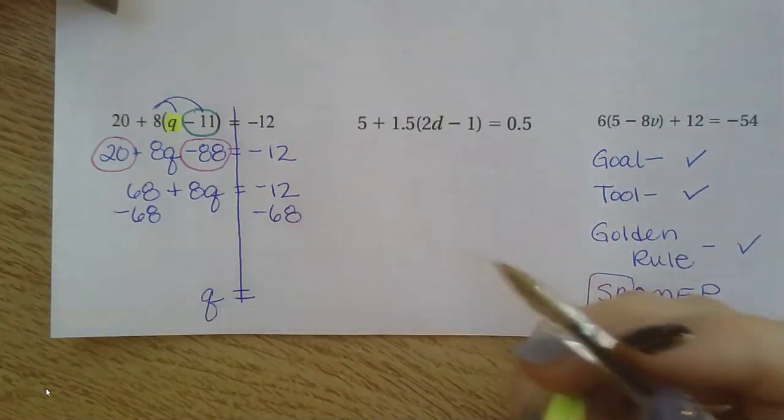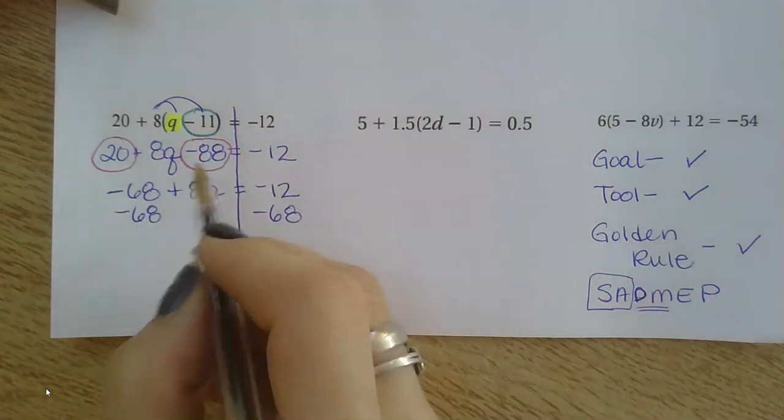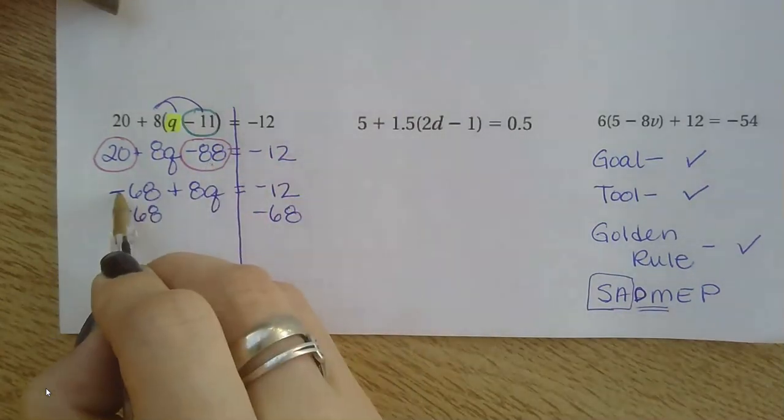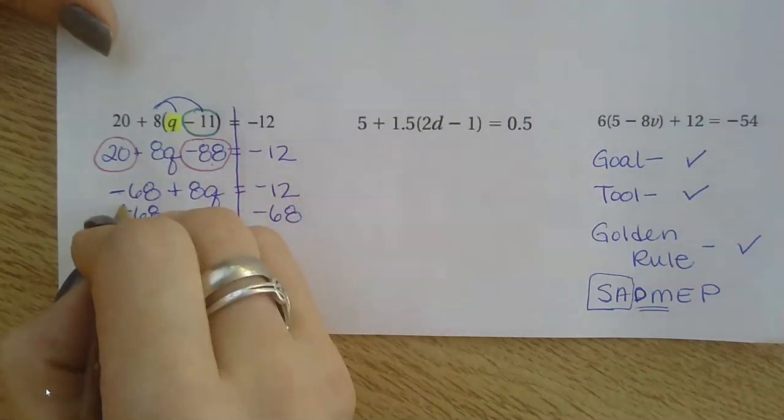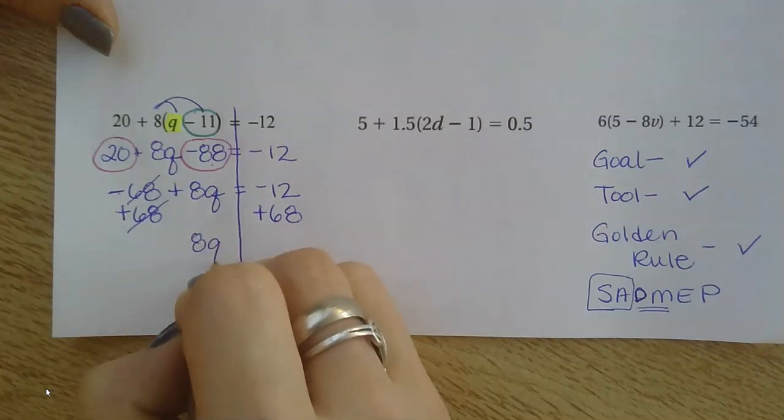Well, when I put those together, I end—oops, sorry. That's a negative 68. My negative was bigger here. Should have gotten negative 68. So I'm going to cancel it by adding 68 to both sides. Now those cancel out. Bring down my 8Q.